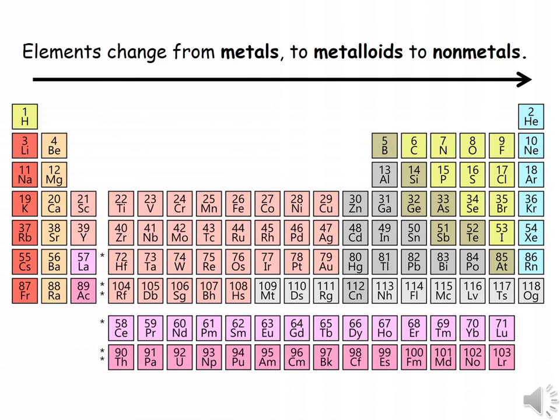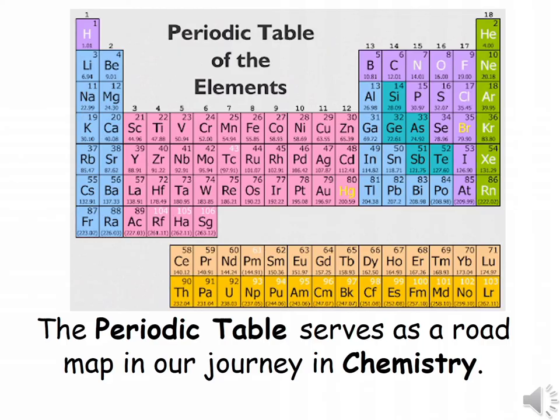As you move from left to right across each period of the table, the elements change from metals to metalloids to nonmetals. This arrangement allows us to study systematically the way properties vary with the elements' position in the table. Similarities and differences among the elements are easier to understand and remember. Yes, in science, the periodic table serves as a road map in our journey in chemistry.